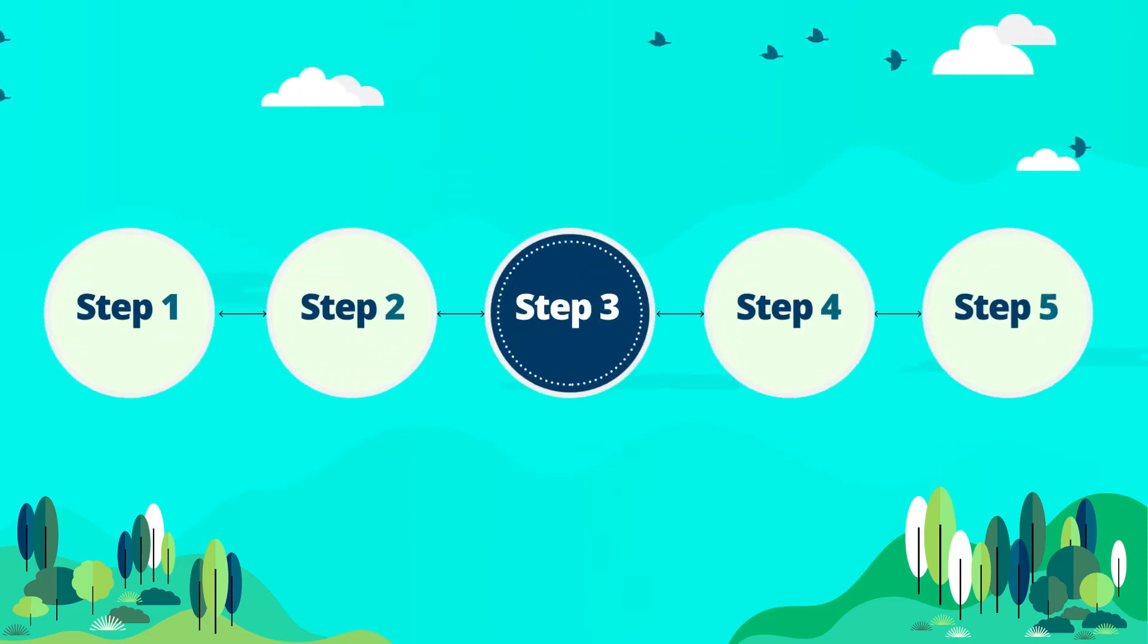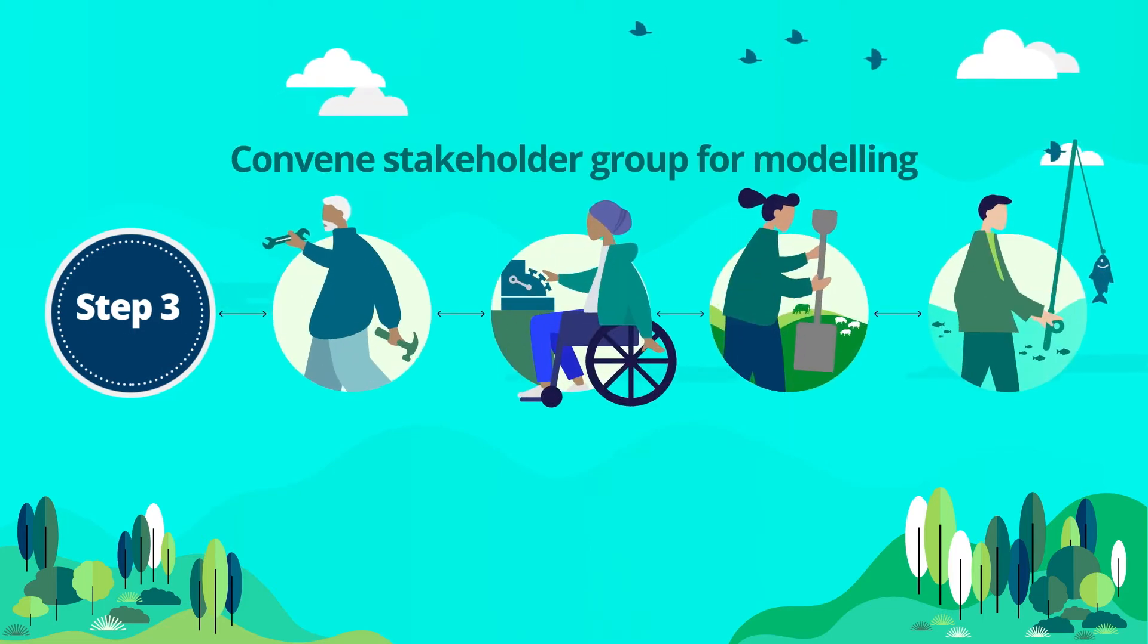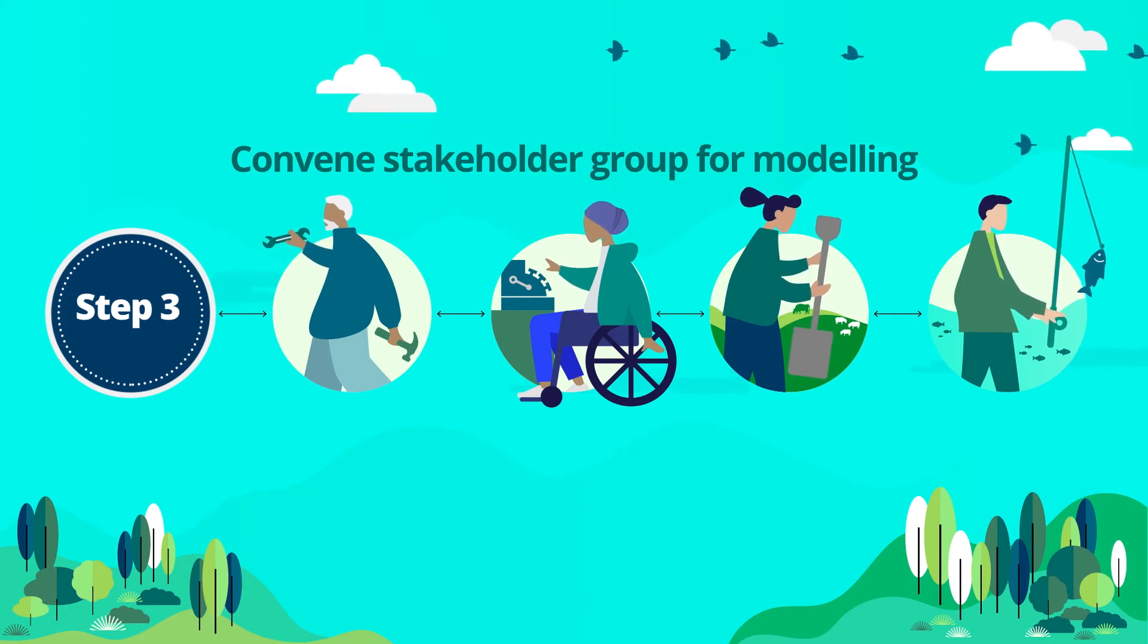Step 3 – Convene a group from across society to conduct participatory modelling. This should include a diverse selection of those who might be positively or negatively affected by the policy and infrastructure options.